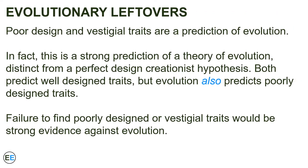Evolution likewise describes things changing over time — in this case, living things descending from ancestors. The process is similar, so we expect to see examples of poor design and leftover or vestigial traits. In fact, this is a strong prediction of the theory of evolution that is distinct from a perfect design or creationist hypothesis. All of these ideas predict fairly well-designed traits in living things, but evolution also predicts poorly designed traits.